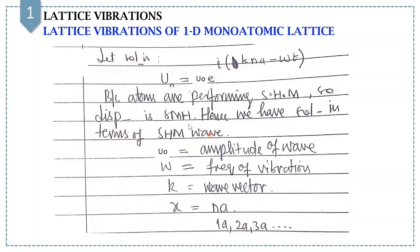Because atoms are performing simple harmonic motion in a chain of atoms, the displacement should be simple harmonic. This is the reason we are guessing the solution of equation number 1 in terms of a simple harmonic wave, which is U_N equals U_0 e^{i(kNa − ωt)}, where U_0 is the amplitude of the wave, omega is the frequency of vibration, and K is the wave vector.